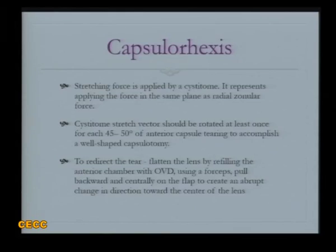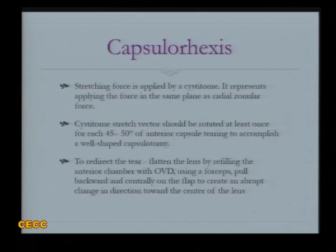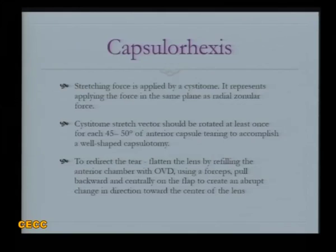It is important that the cystotome stretch vector should be rotated at least every 45 to 50 degrees to accomplish a well-shaped capsulorrhexis. We may have to refill the anterior chamber if we cannot stabilize it, and we use forceps whenever the rhexis has gone outside to bring it back centrally and create an abrupt change in the direction of the anterior capsule.